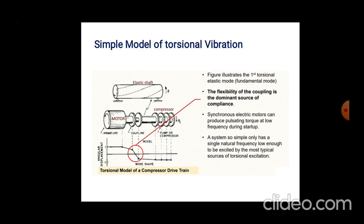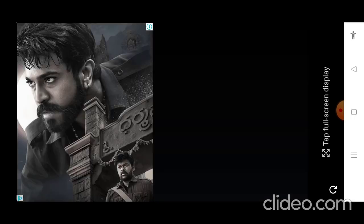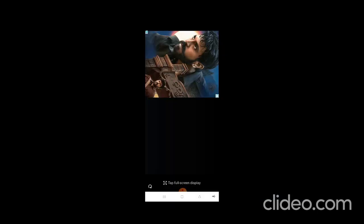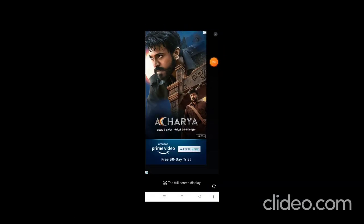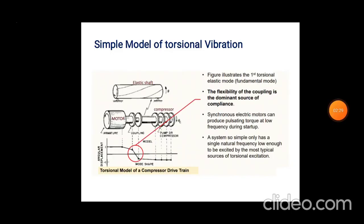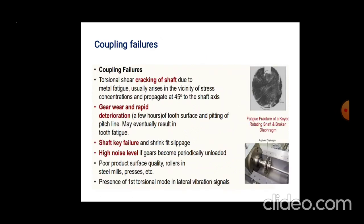The simple model of torsional vibrations illustrates the torsional model of the compressor drive. Coupling failures include twisting, torsional shear, and cracking of the shaft due to metal fatigue — that is cyclic loading acting on the shaft.